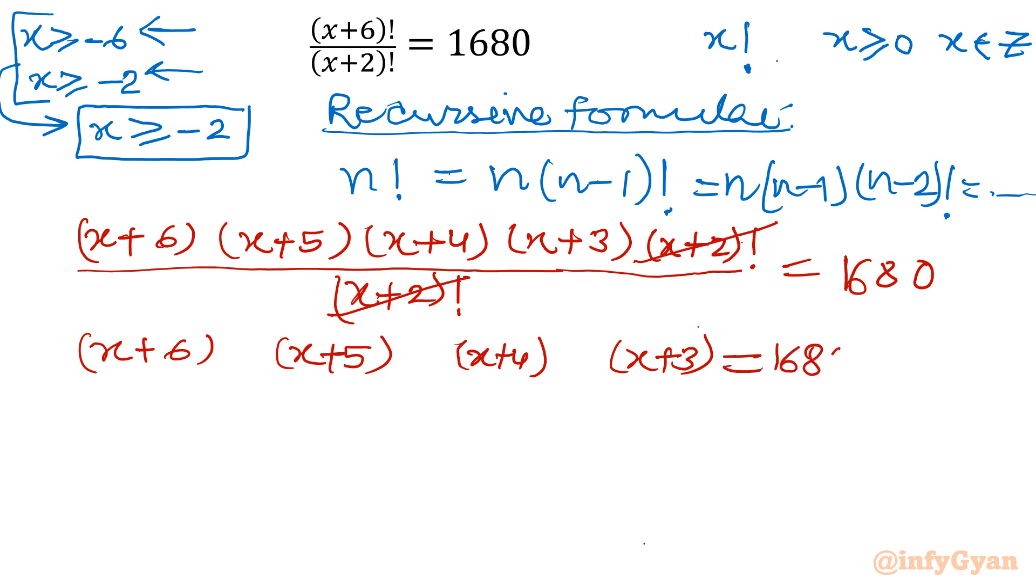Now I will write our equation: (x+6)(x+5)(x+4)(x+3) equal to 1680. Let's find out where I give substitution. I have to give our substitution at which point. So I will consider 3, 4, 5, 6.